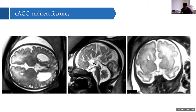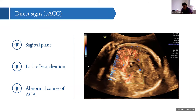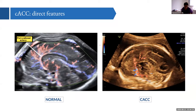Another indirect sign is the radial disposition of cerebral fissures, which is most visible on MRI. The only plane that directly confirms absent corpus callosum is the mid-sagittal plane, where the corpus callosum is not visualized and the anterior cerebral artery — instead of following the shape of the corpus callosum as the pericallosal artery — ascends directly to the calvarium. Comparing a normal case with an ACC case makes this abnormal arterial course clearly visible.